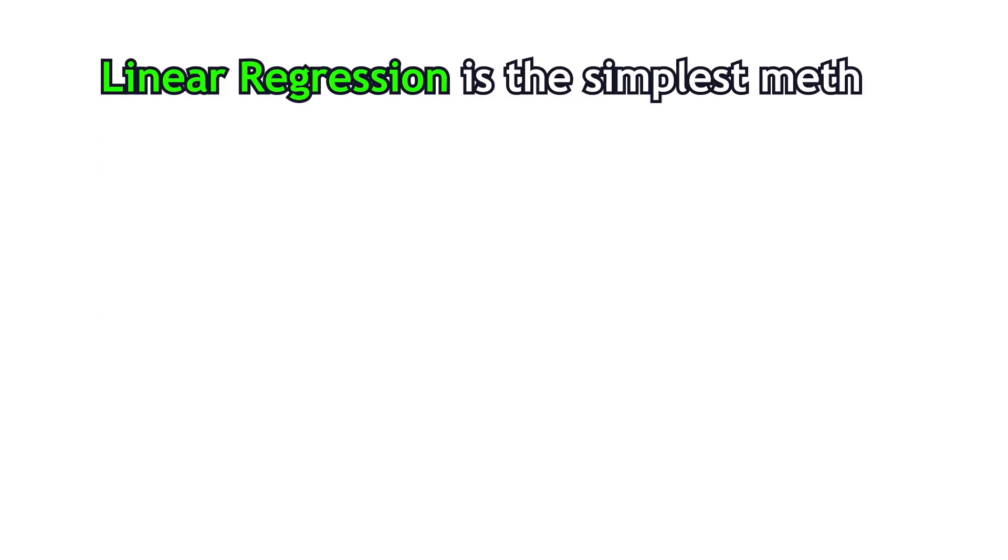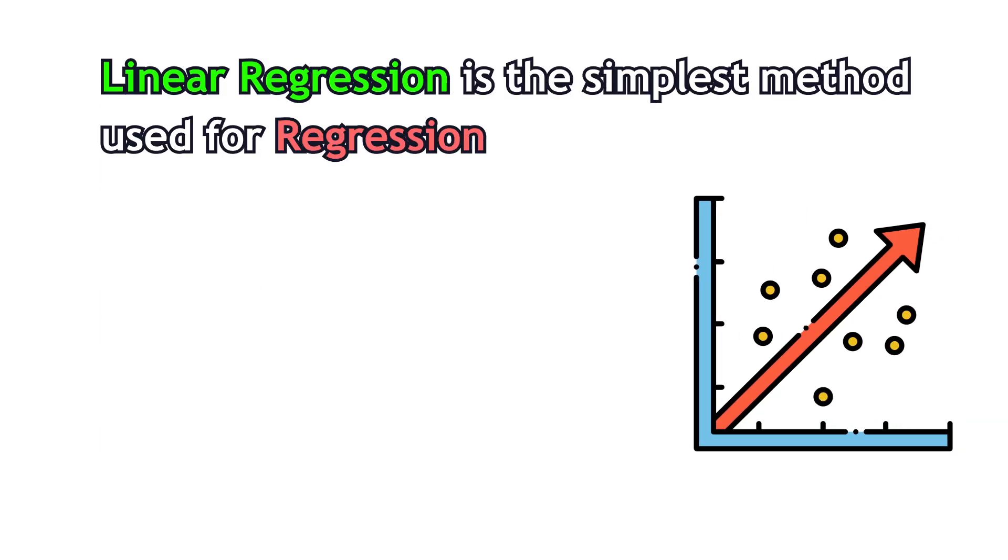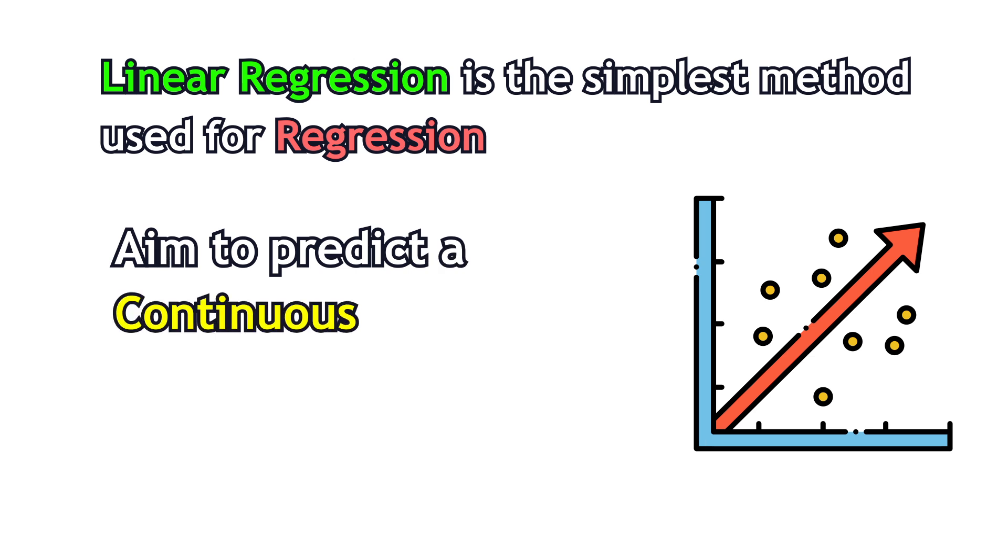Linear regression is the simplest method used for regression, meaning you aim to predict a continuous value.